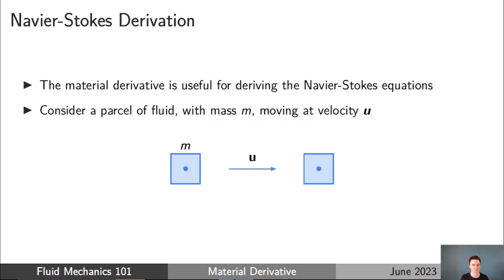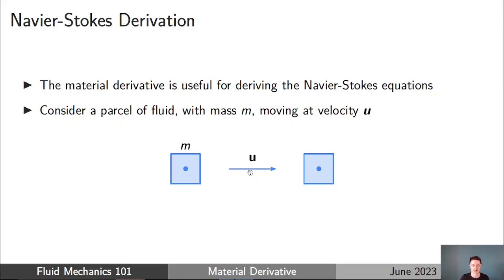How do we do this quick and easy derivation? Consider a parcel of fluid — a group of fluid molecules together, like an imaginary box around them, with mass m, moving at some velocity u. Following Newton's laws of motion: if there's no net external force on the parcel, it continues with the same momentum. If there is a net external force — from the surrounding fluid or an external force like gravity — then the momentum of the fluid parcel will change, and the rate of change of momentum equals the net external force. That's Newton's second law.